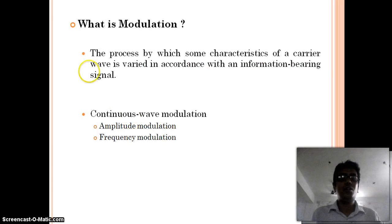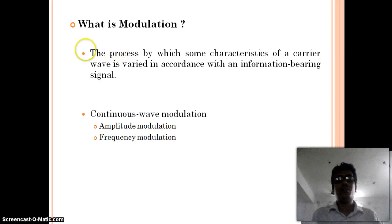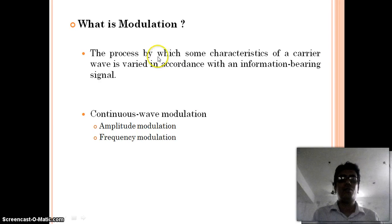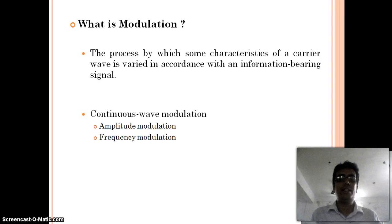Now we will see what is modulation. Modulation is a process. An information signal has limited frequency and power, so we can't transmit the information signals over a far distance. We have to take the help of a high power and high frequency carrier signal to carry the information signal into a specific distance. Modulation is a process by which we can transmit a modulating signal by the help of a carrier signal.